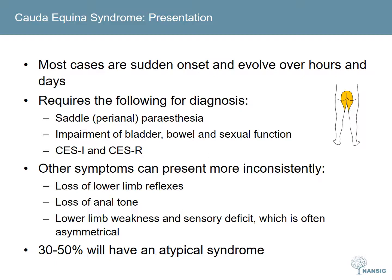Cauda equina syndrome can be further subdivided into CES-I and CES-R. CES-I, an incomplete syndrome, will include some form of urinary disturbance such as reduced urinary sensation, loss of desire to void, or poor stream. Whereas CES-R, a retention syndrome, means that the compression has been sufficiently significant to cause urinary retention and overflow incontinence. Other neurological symptoms may be present but are not as consistently found, including loss of lower limb reflexes, reduced anal tone, and asymmetrical weakness or sensory deficit.